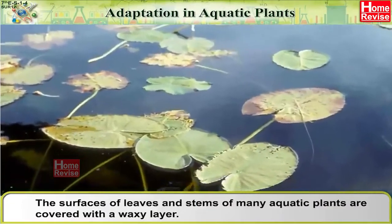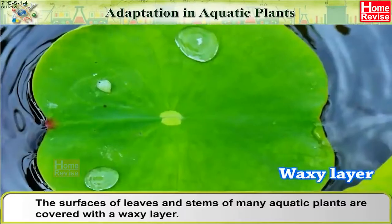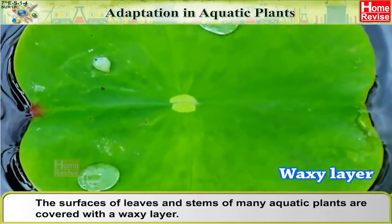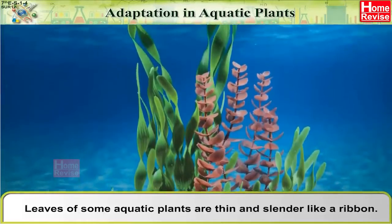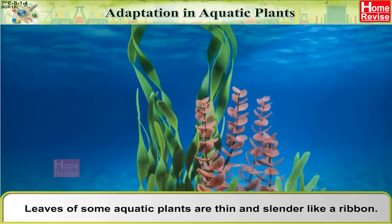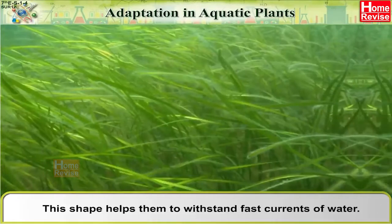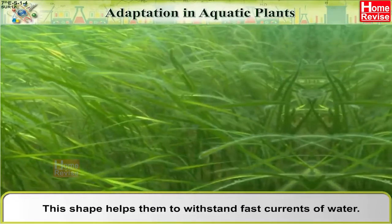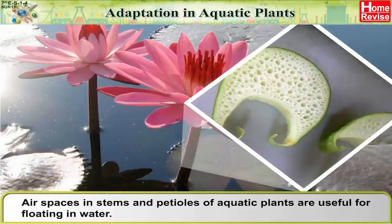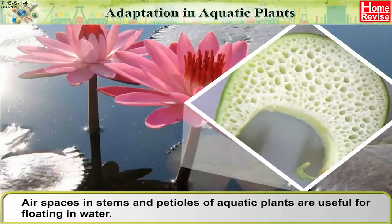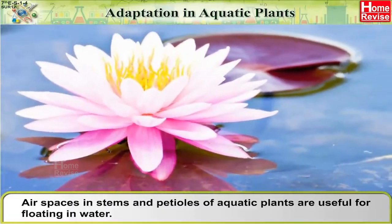The surfaces of leaves and stems of many aquatic plants are covered with a waxy layer. Leaves of some aquatic plants are thin and slender like a ribbon, which helps them withstand fast currents of water. Air spaces in stems and petioles of aquatic plants are useful for floating in water.